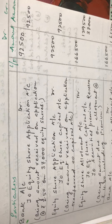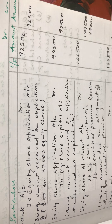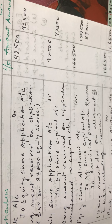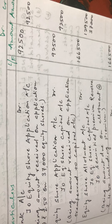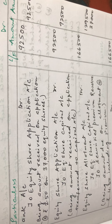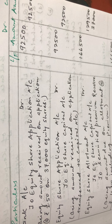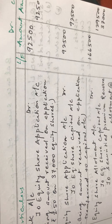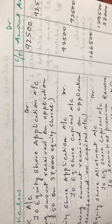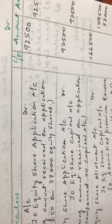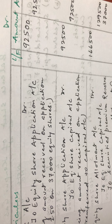Welcome to your accountancy class. In today's class we will solve sum number nine. Kanpur Gas Limited issued 40,000 equity shares of rupees 10 each at a premium of rupees 1 per share. We have to add security premium reserve. Amounts were payable as follows: rupees 2.50 on application, rupees 4.50 on allotment including premium, rupees 2 on first call, and rupees 2 on final call.